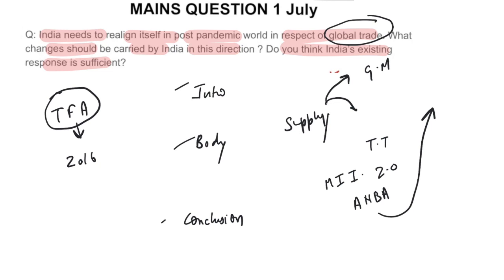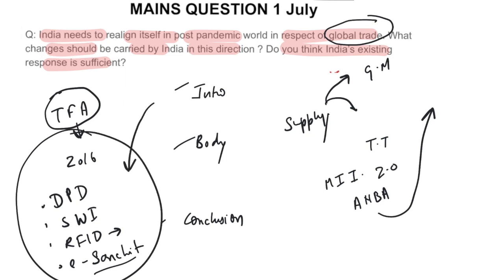Now the practical application of the TFA has to be carried. Moreover, much work has already been done as we had seen yesterday, the example of the direct port delivery, the single window interference, then RFID identification of the export consignments, and then comes the eSanchit program to make the import export seamless. This is the response. Now you need to evaluate whether this is sufficient or much more needs to be done. We'll see that though the strides have been impressive, but still much needs to be done. And in that particular direction, we will be listing out that more seamless integration of different stakeholders is needed to be carried, then the technical glitches, then the convergence and all these things are needed to be done.